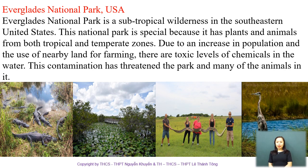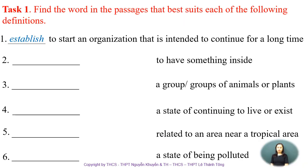After the first reading of these passages, let's move to Task 1. In Task 1, we have to find the words in the passages that best suit each of the following definitions. For number 1, already done for you: 'to start an organization that is intended to continue for a long time' — the answer is 'established.' For number 2, it means 'to have something inside' — the answer is 'contained,' with stress on the second syllable.